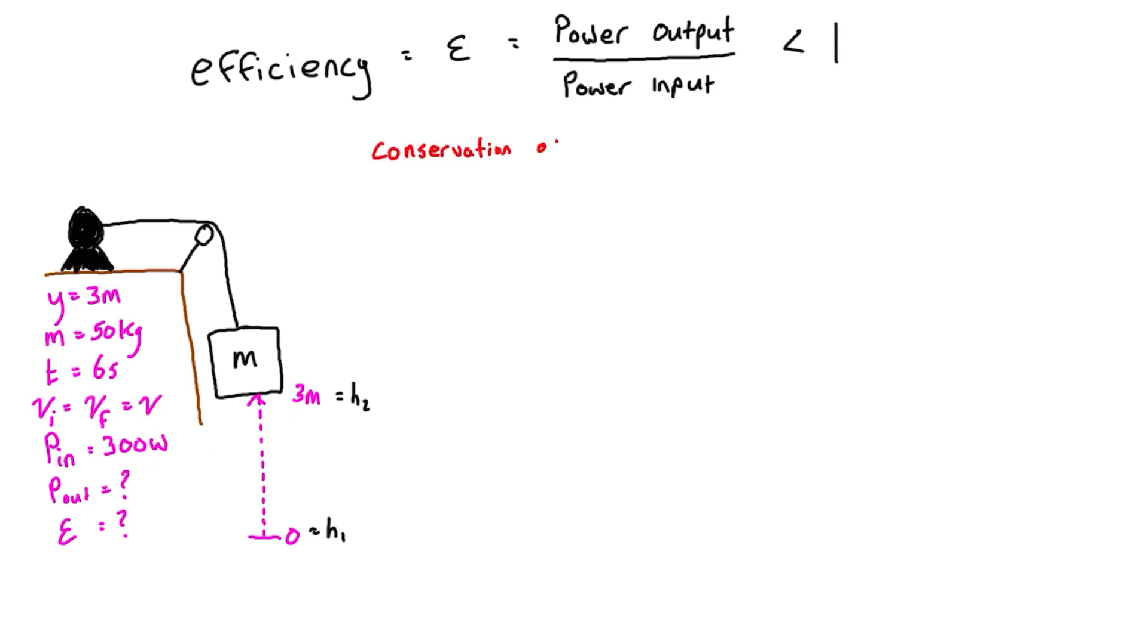To get started, we use the conservation of energy equation, which is T1 plus V1 plus the sum of work done from 1 to 2 equals T2 plus V2. The capital T is kinetic energy, and the capital V is potential energy. We can expand that out, and like the last video, I will be able to cancel out this term.